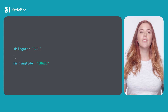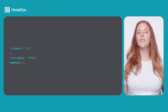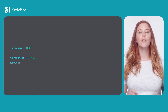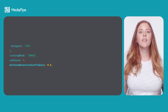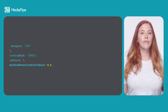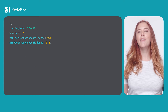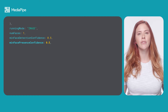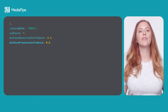Running mode for inference is either image or video — image is the default value. numFaces is the maximum number of faces for landmark detection; it's an integer greater than 1 with a default value of 1. minFaceDetectionConfidence is the minimum confidence score for face detection to be considered successful; it's a float value between 0 and 1 with a default of 0.5. minFacePresenceConfidence is the minimum confidence score of face presence in the face landmark detection; it's also a float value between 0 and 1 with a default value of 0.5.